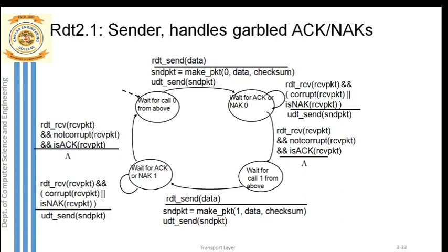Let's start with the state diagram. The initial state of RDT 2.1 is waiting — here we are speaking about the sender. The sender basically waits for data to arrive from the application layer. Once the data arrives, the event invoked is RDT send, meaning data has just arrived from the application layer. Now the sender immediately creates a packet by inserting that received data. As in RDT 2.0, the sender adds a checksum along with the data.